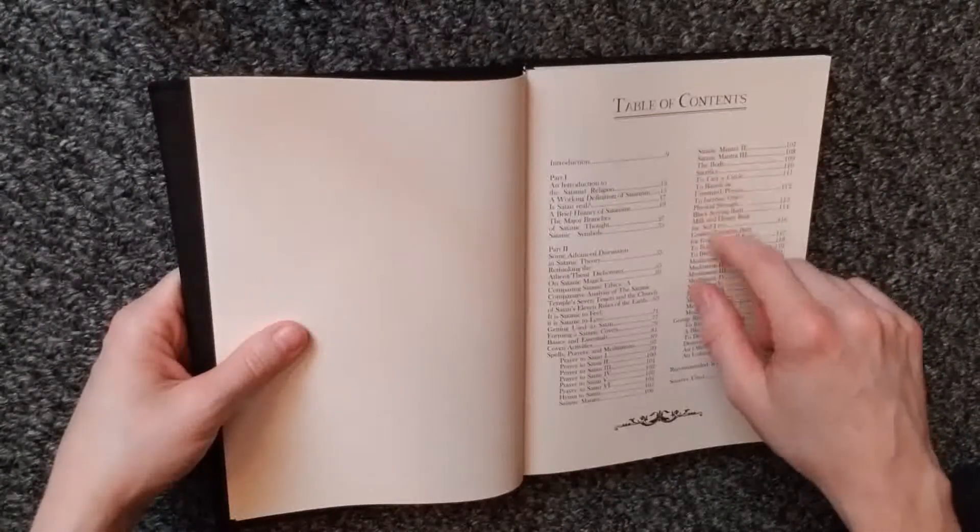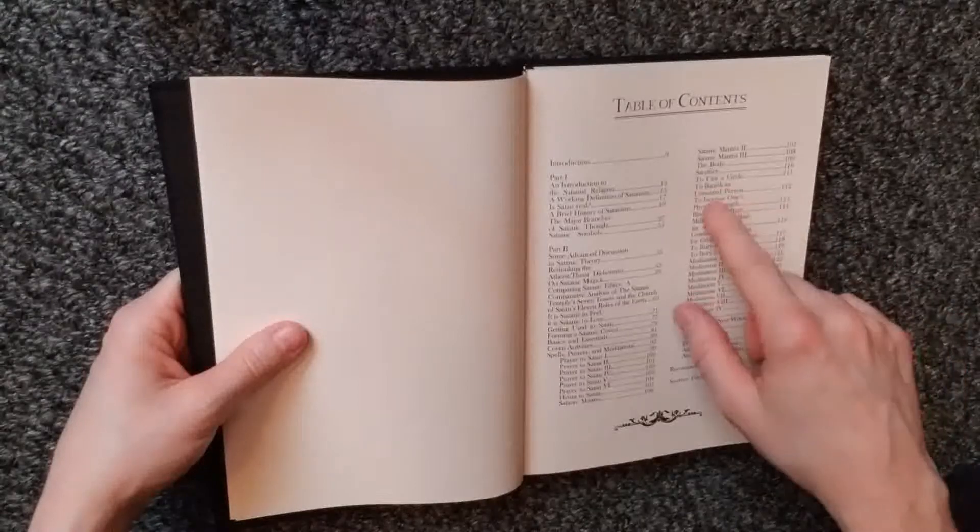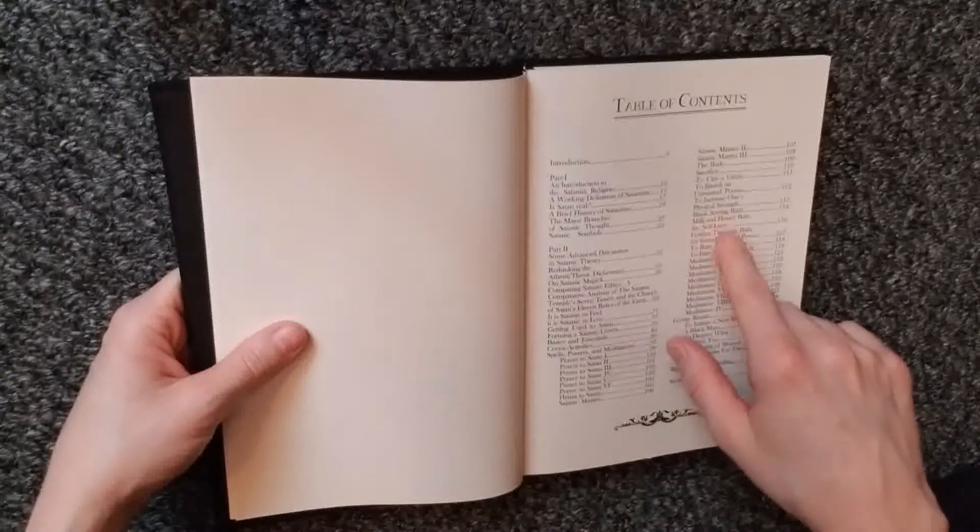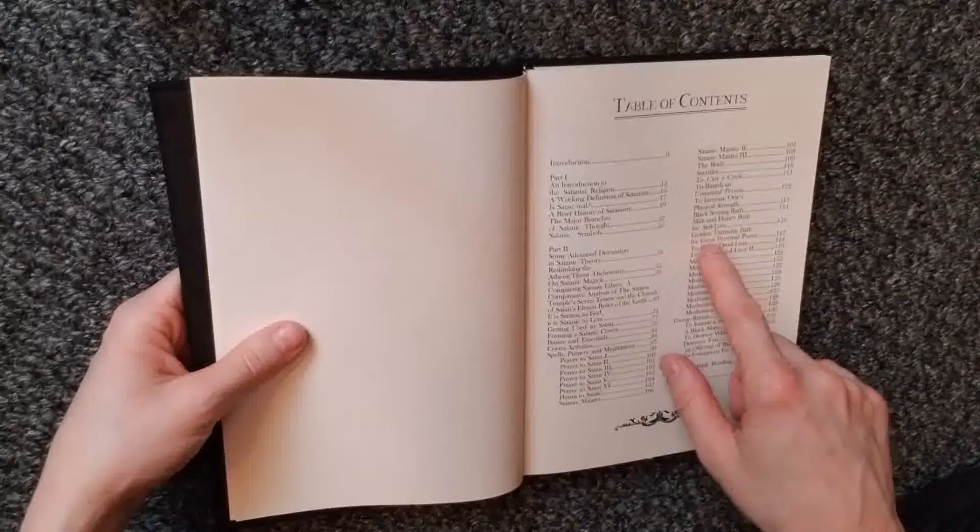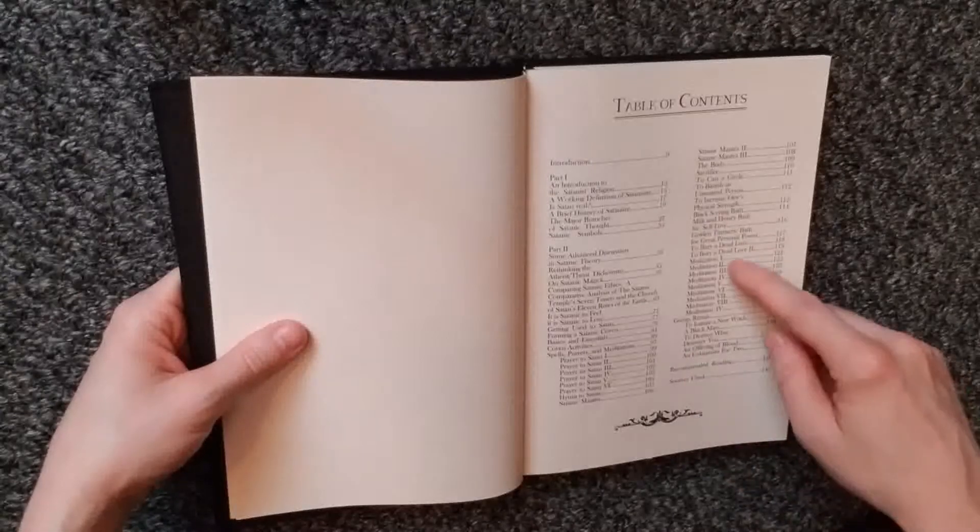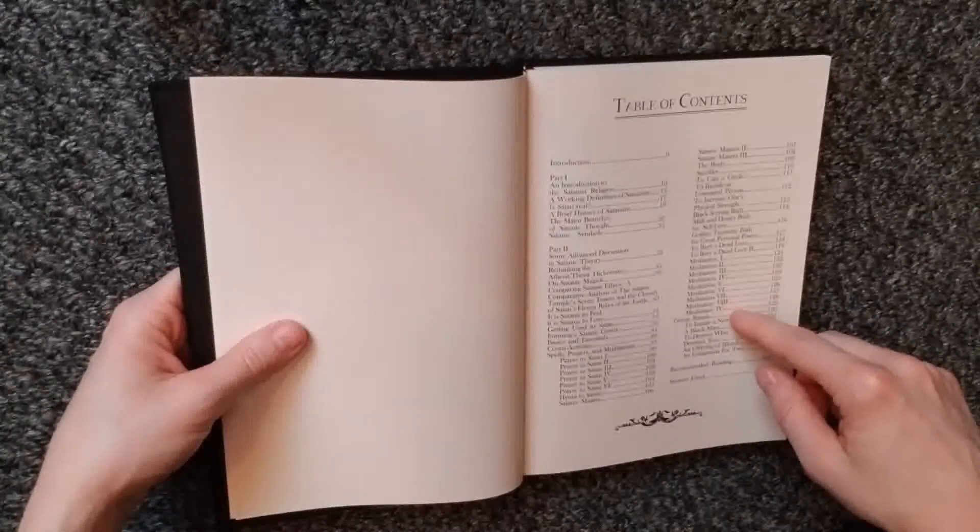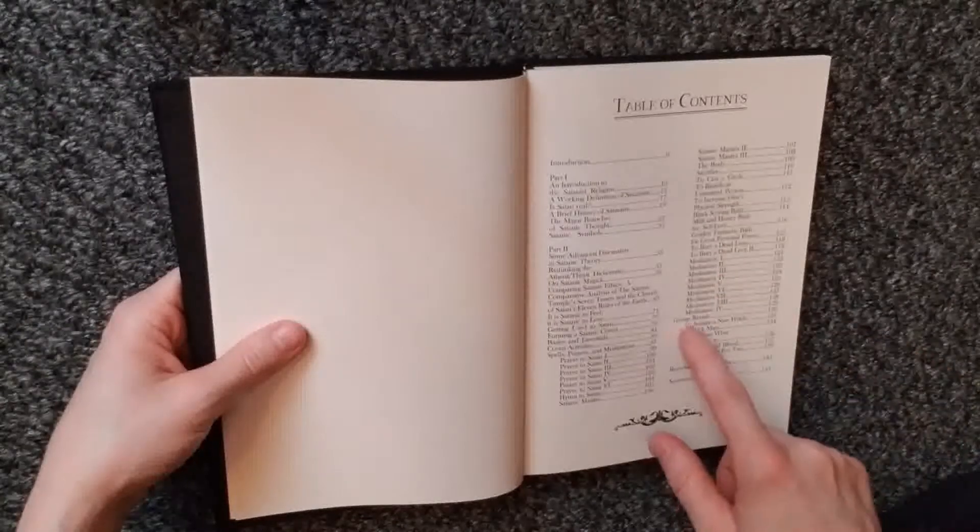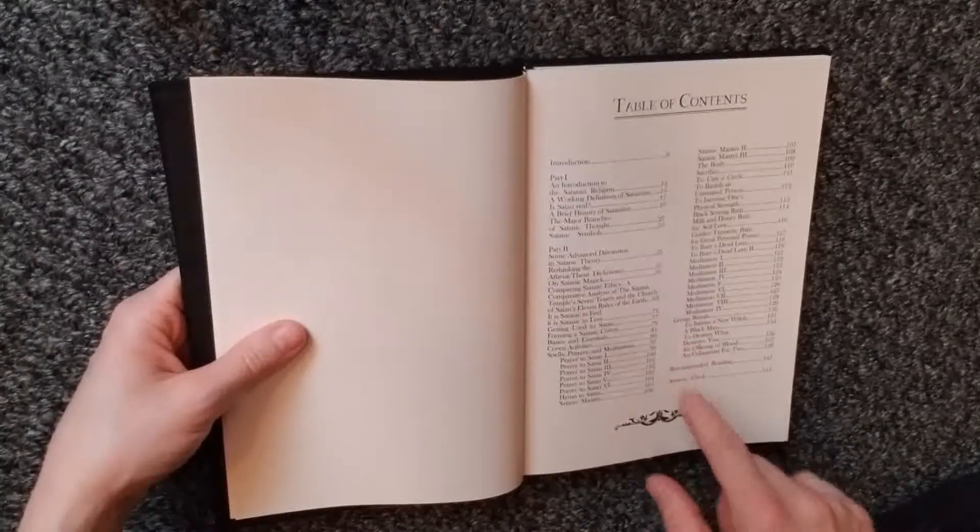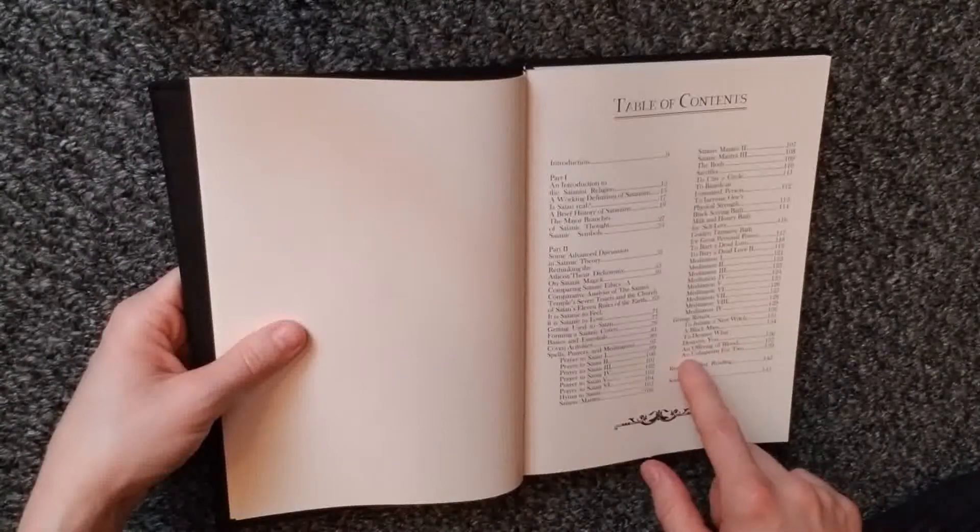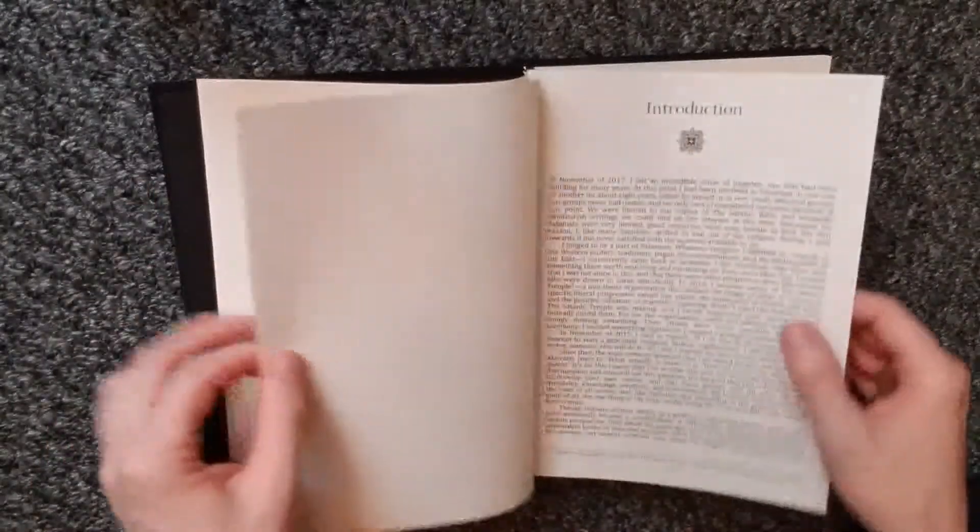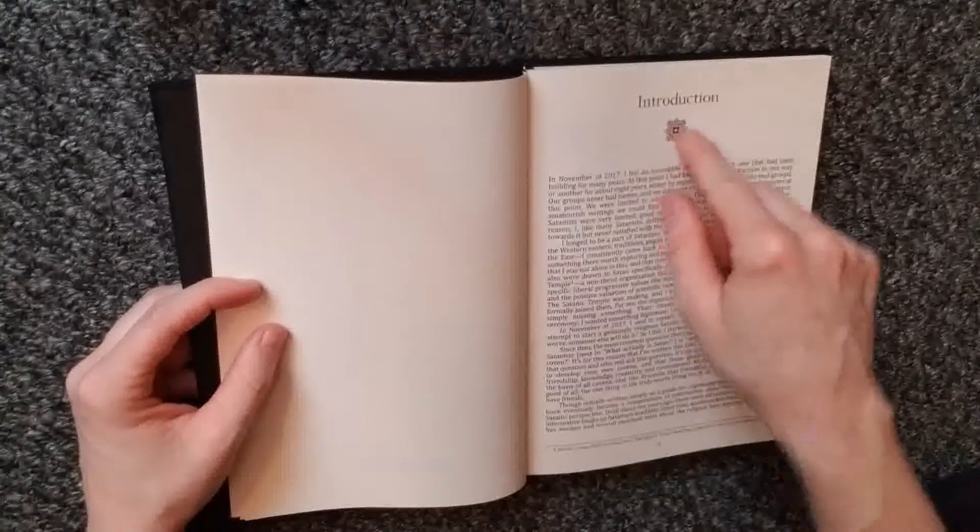Spells, Prayers, and Meditations, and then they have six different ones, Prayers to Satan, Hymn to Satan, Satanic Mantras One, Two, and Three, The Body, Sacrifice, To Cast a Circle, To Banish an Unwanted Person, To Increase One's Physical Strength, Black Scrying Bath, Milk and Honey Bath for Self-Love, Golden Turmeric Bath for Great Personal Power, To Bury a Dead Love.